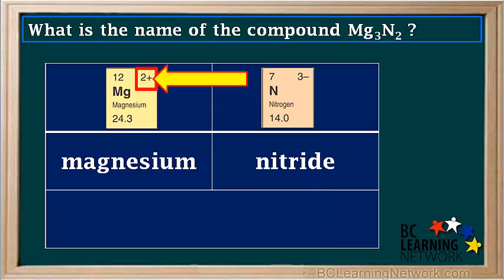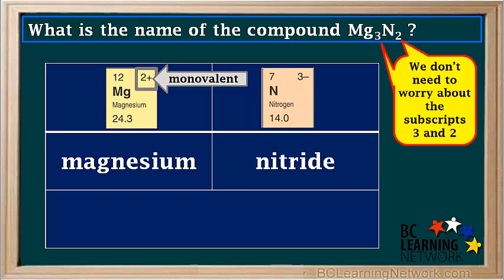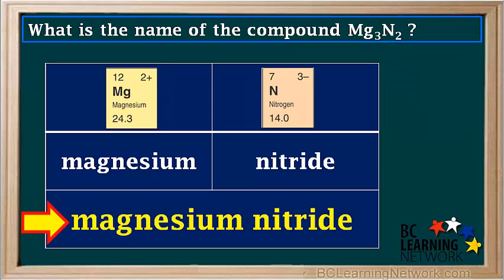Again, we check the metal magnesium, and we see it has only one possible charge, so it's monovalent. Therefore, we don't need to worry about the subscripts 3 and 2, the charges, or roman numerals. So the name of this compound is simply magnesium nitride.